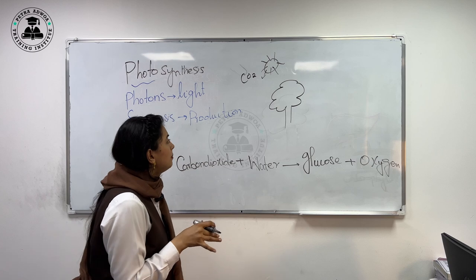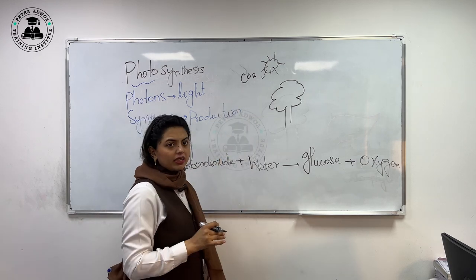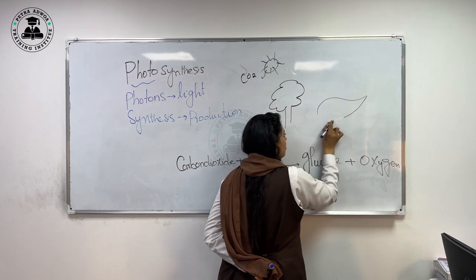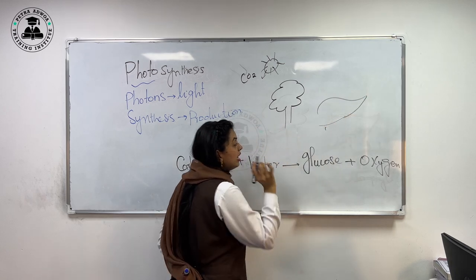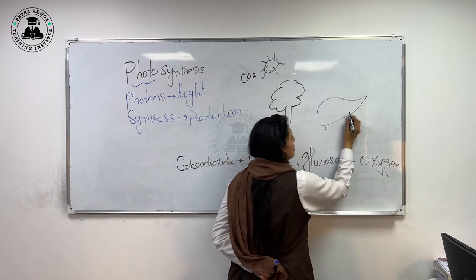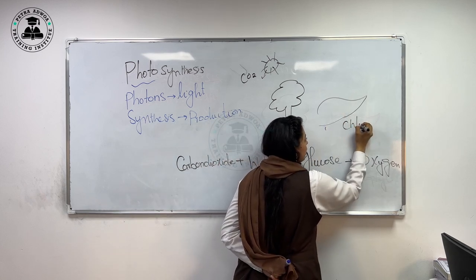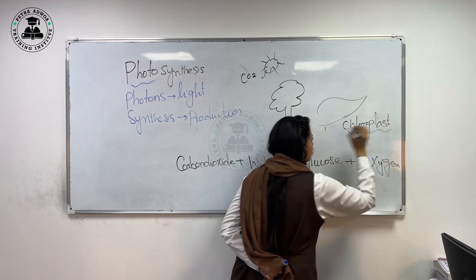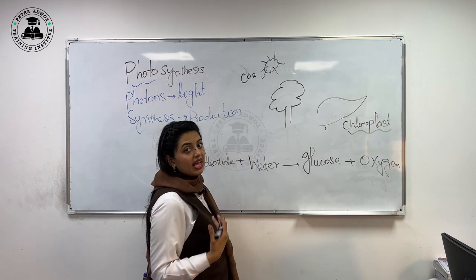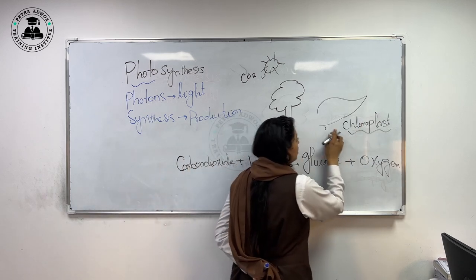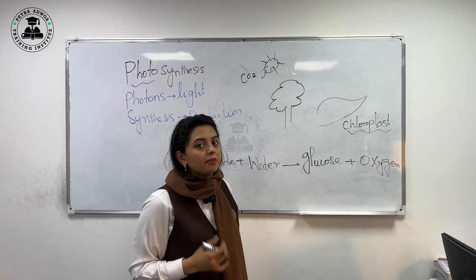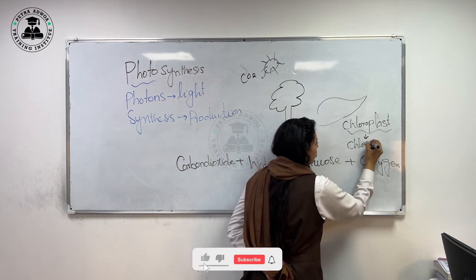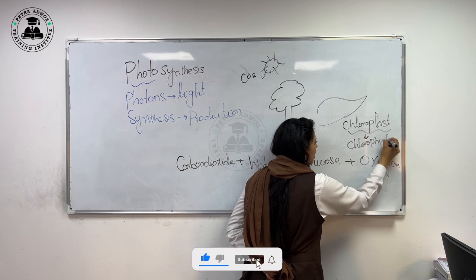Do you know which part of the plant photosynthesis occurs in? It occurs in the leaves — specifically in an organelle inside the leaf cells. We call that organelle the chloroplast. The chloroplast is where photosynthesis occurs and it absorbs sunlight. The leaf cells have a large number of chloroplasts, and chloroplasts have a green pigment called chlorophyll.